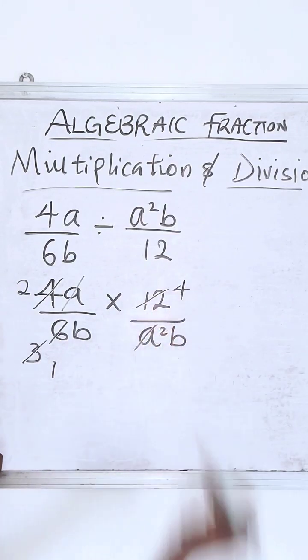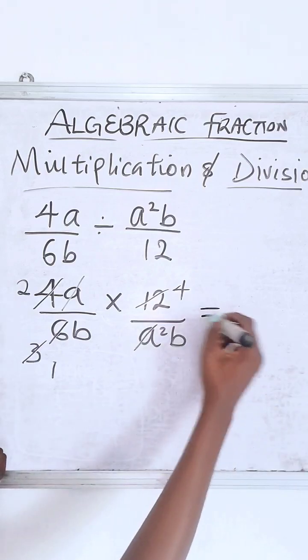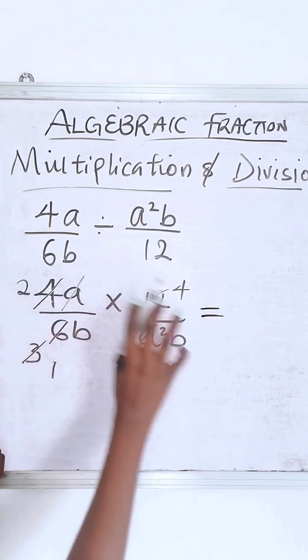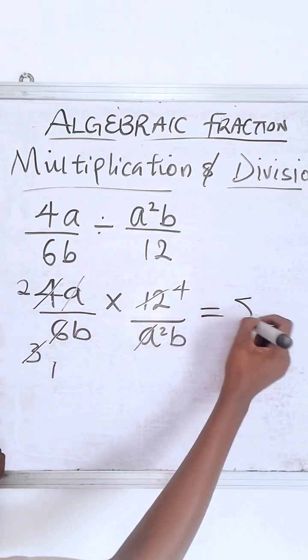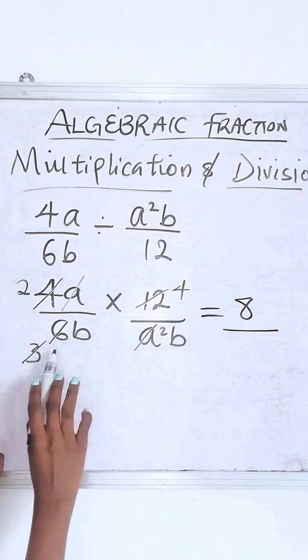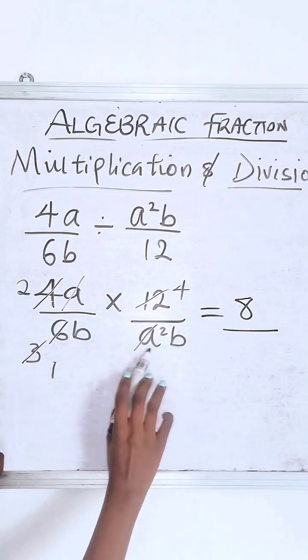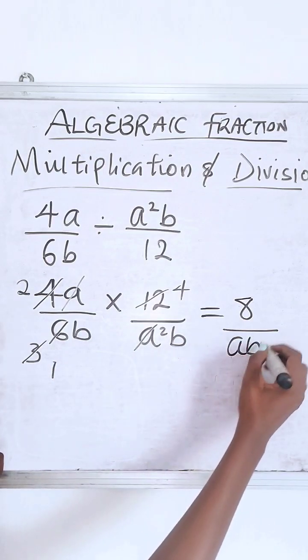3 can go here 4 times. We can move on from here. So you are left with 2 and 4. So 2 times 4 is 8. All over we are left with b and ab, so you have ab square.